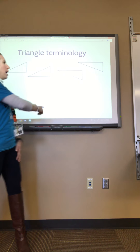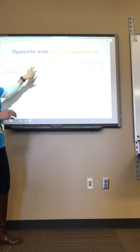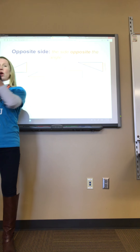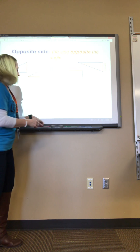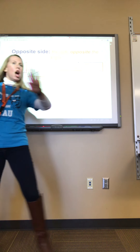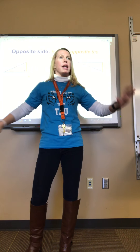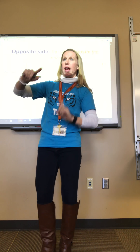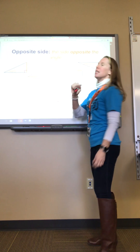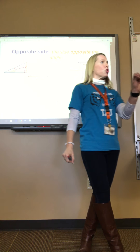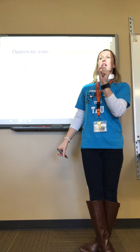Every triangle has an angle. We're not going to use the right angle with trigonometry — every one of these triangles has a right angle, but we look at one of the other two angles. There is a side opposite that angle, so if my angle is here, this would be the side opposite.